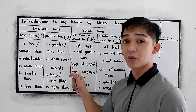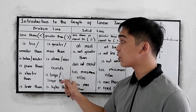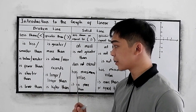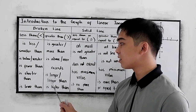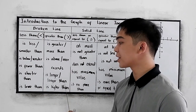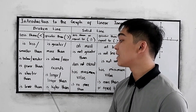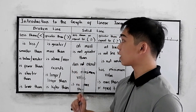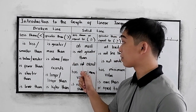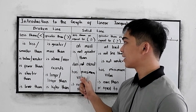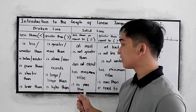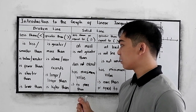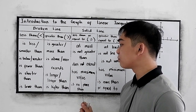For the greater than symbol, we have: is greater than or more than, is above or over, exceeds, is larger or longer than, is higher than. For the less than or equal to symbol, we have: at most, is not greater than, does not exceed, has maximum value.